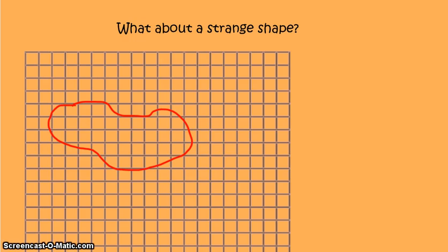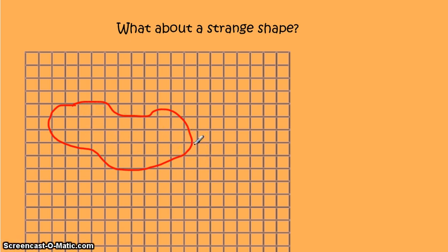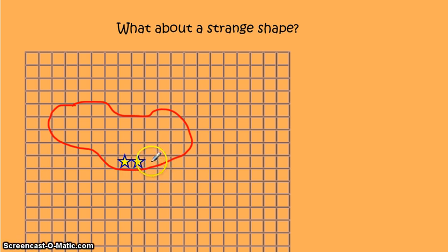Now let's look at one more kind of shape. This is obviously not even an irregular rectangle — there's really no way to split it into rectangles. So what do we do? A good strategy is to use a pen, pencil, or crayon and count how many whole squares you see. I usually start at the bottom or top and work my way across. Starting at the bottom: one whole, two wholes, and I'll count this one as a whole — three.